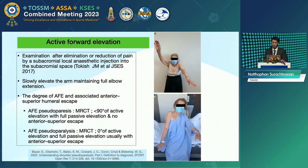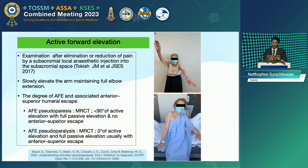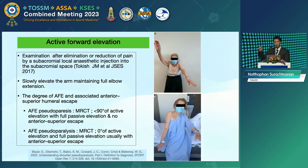A massive cuff tear can result in active forward flexion less than 90 degrees with full passive range of motion but no anterior superior escape. In active forward elevation pseudo-paralysis, the patient cannot lift up the arm — zero degrees of elevation — but has full passive range of motion with anterior superior escape.